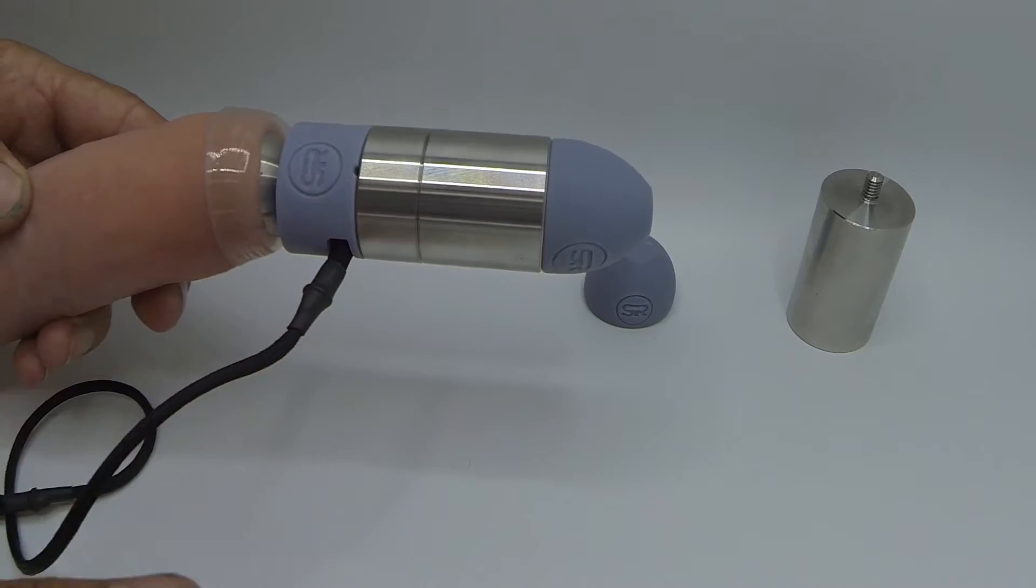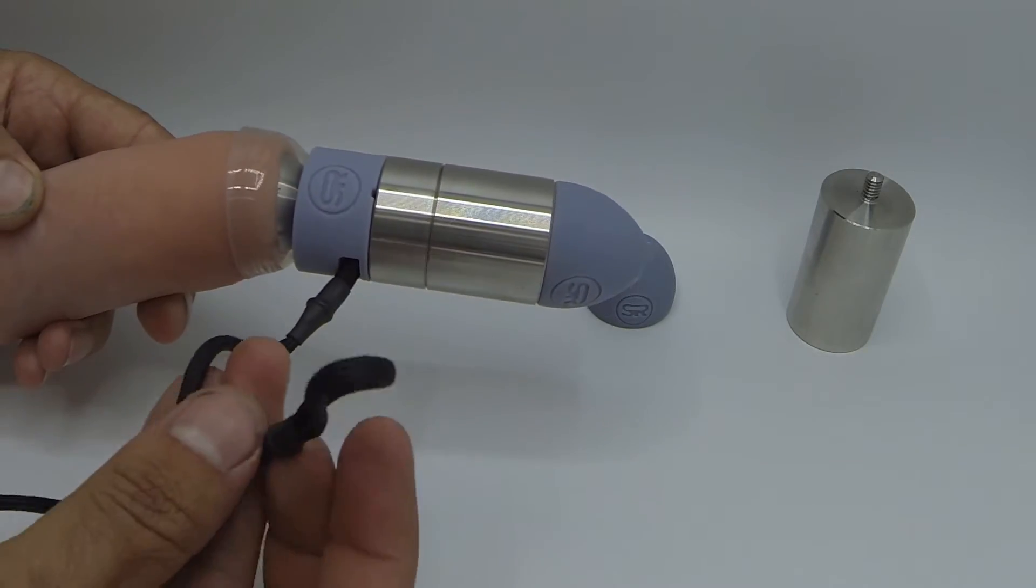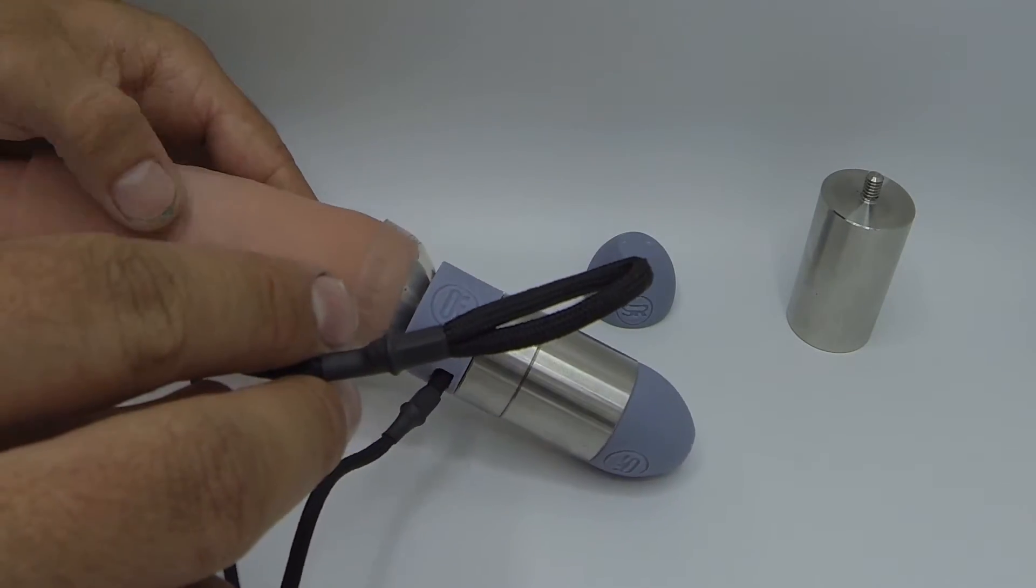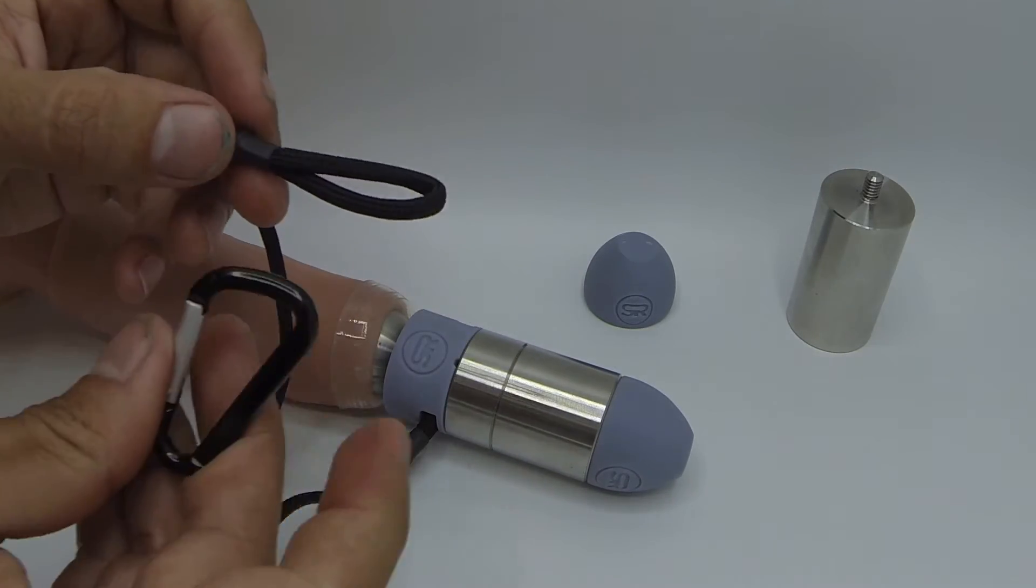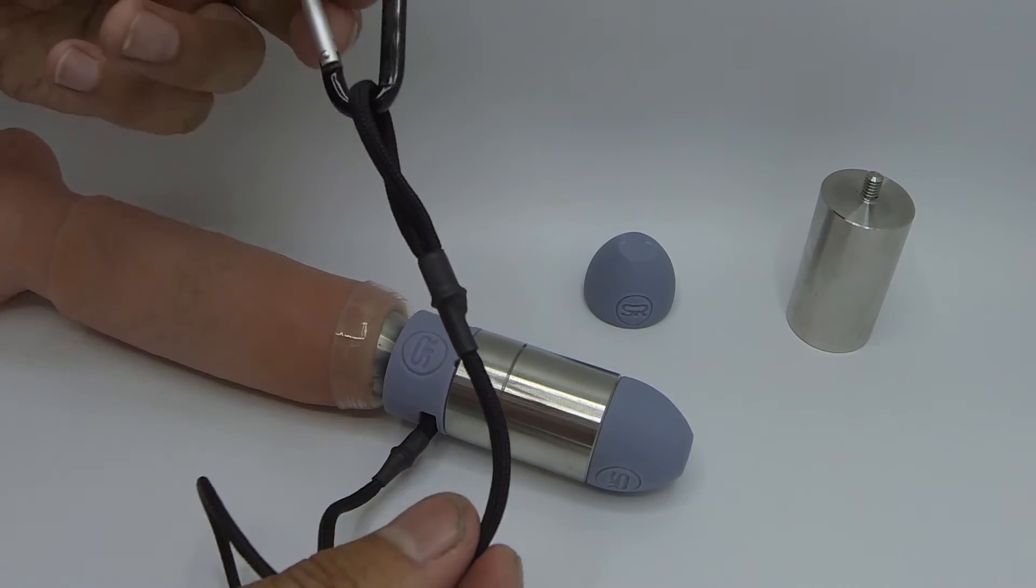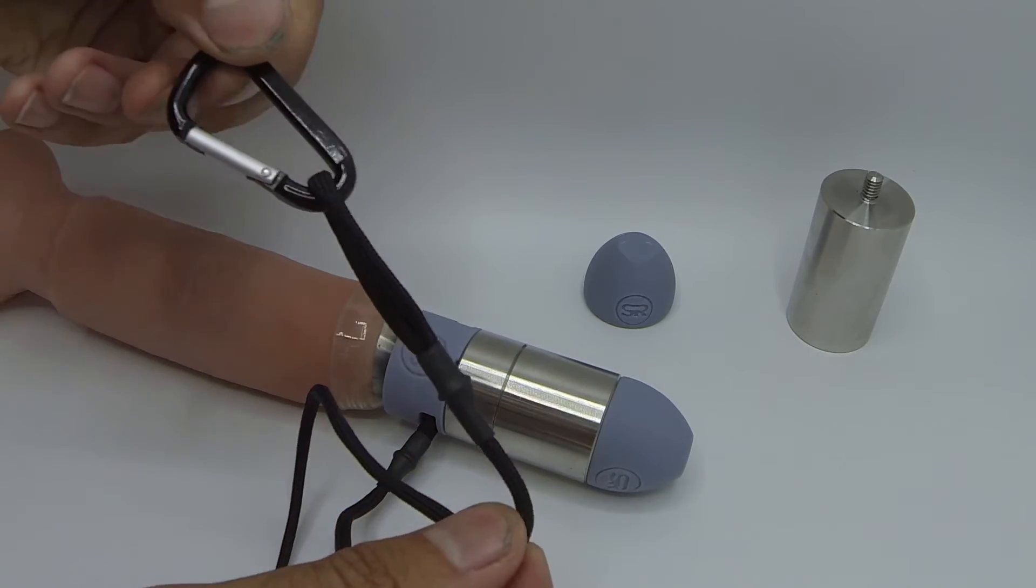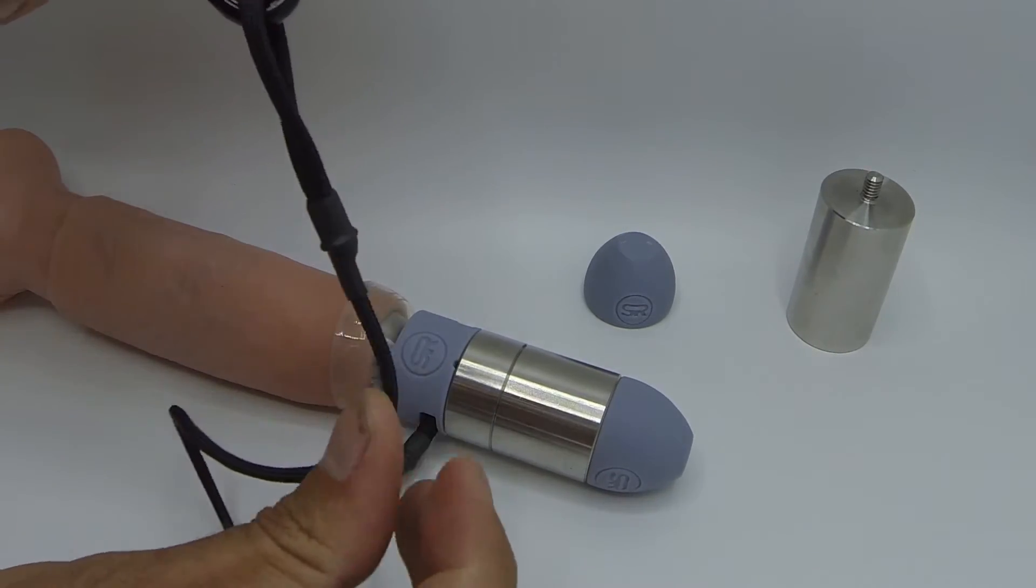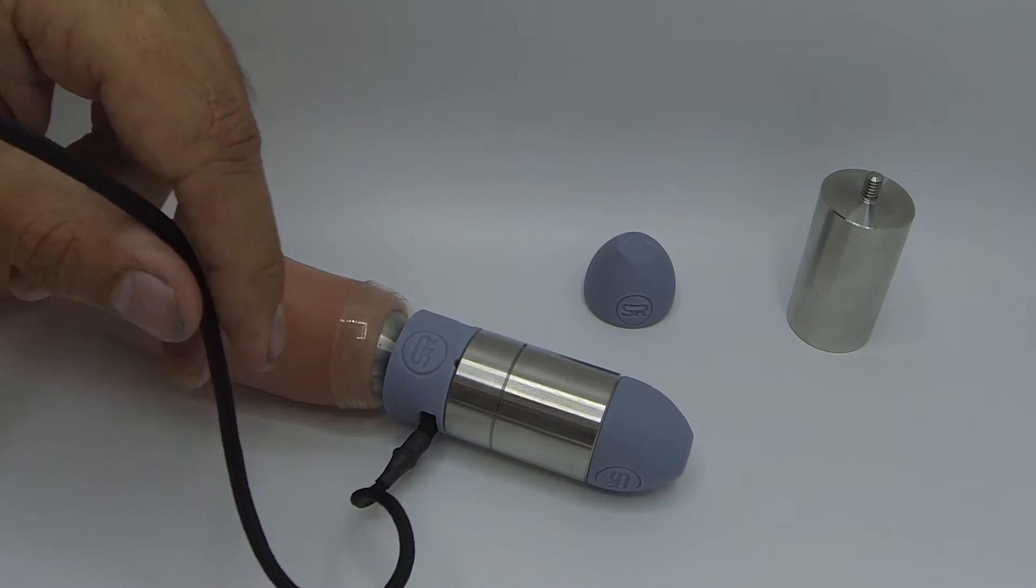Now we're going to take the other end of our safety strap. We recommend looping a carabiner through this. This will allow you to hook the weight set to a loop on your pants to help prevent the whole weight setup from falling if the gripper happens to slip.